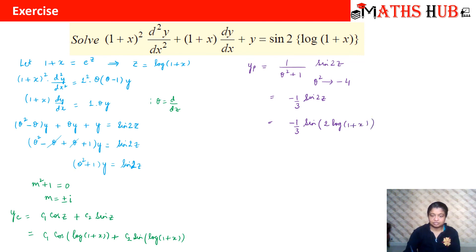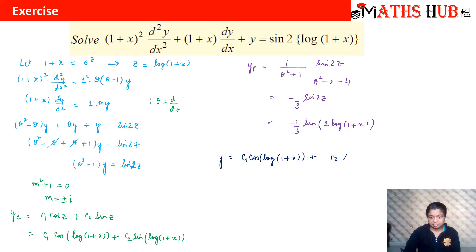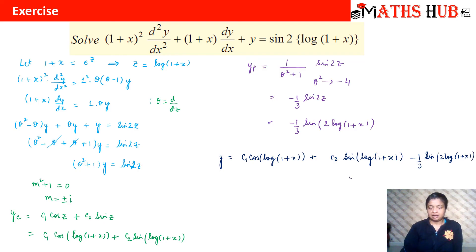So the final complete solution is: y = c₁cos(log(1+x)) + c₂sin(log(1+x)) − (1/3)sin(2·log(1+x)). This is our final answer.